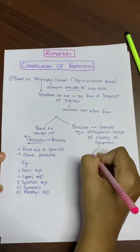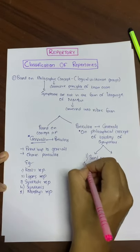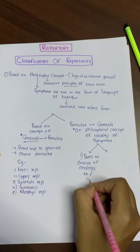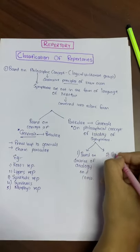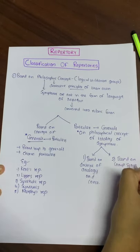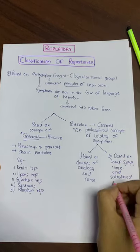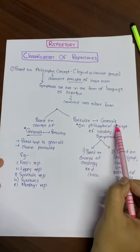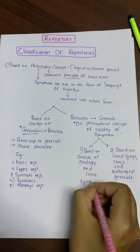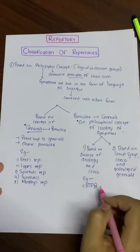This is further divided into two parts. First is based on the doctrine of analogy and concomitant — the example for this is BTPB, that is the Therapeutic Pocket Book by Boenninghausen. The second part is based on complete symptom, concomitant, and pathological general.